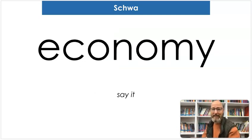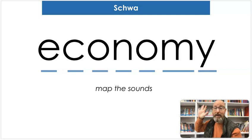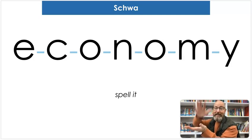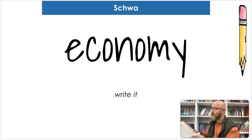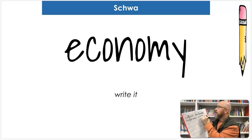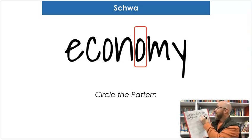Next one is 'economy.' Say economy. The economy is how a country or a group is doing with their money. Map the sounds: E-C-O-N-U-M-E. Economy. Did you find that schwa? E-C-O-N-O-M-Y. Economy. And let's write it: E-C-O-N-O-M-Y. And where's the schwa? It's that O — that's right. E-C-O-N-U-M-Y.